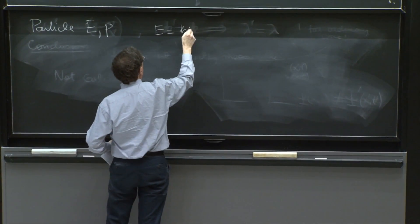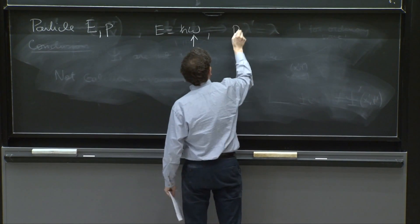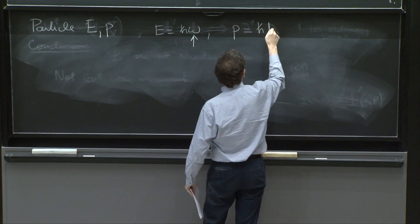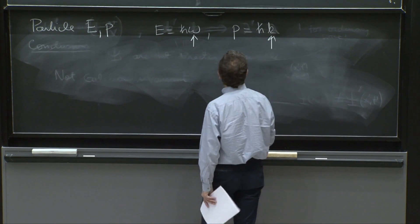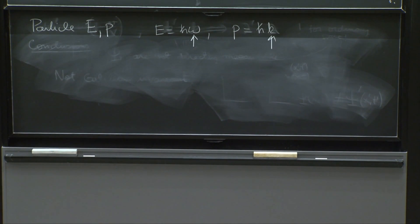E is equal to h bar omega, so you can get the omega of the wave. And p is equal to h bar k. You can get the k of the wave. So de Broglie has told you that's the way to do it. That's the p and the k. But what is the wave?